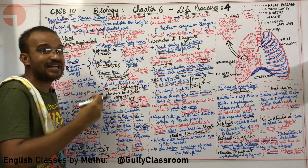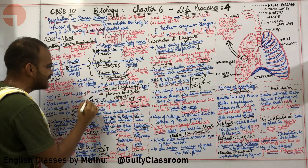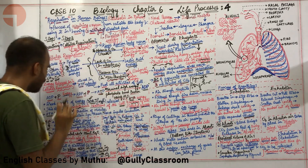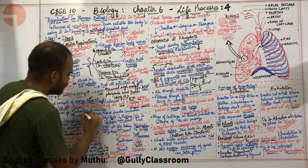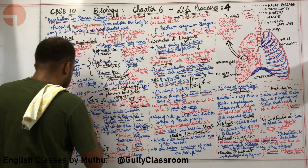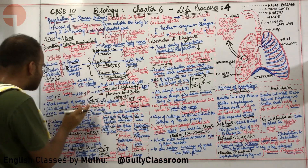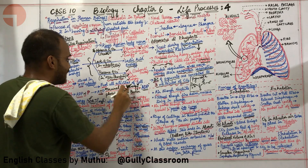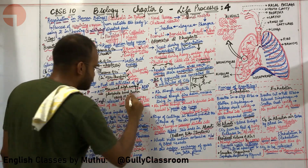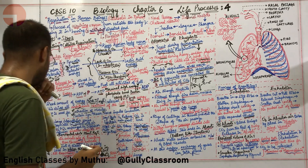ATP is formed using energy, and when work is to be done, ATP is broken — the terminal high-energy phosphate bond is broken. A fixed amount of energy is released: 30 kilojoules per mole. This energy drives all endothermic reactions of the cell. ATP molecules are used not just for physical work but also for nerve impulse conduction, protein synthesis, and contraction of muscles — everything.